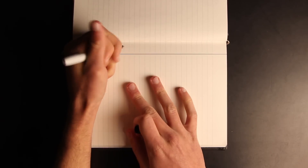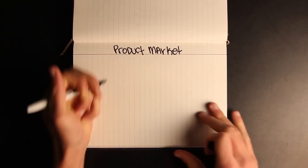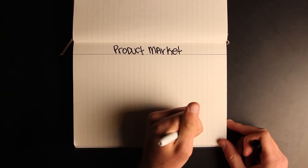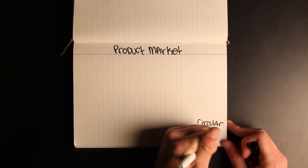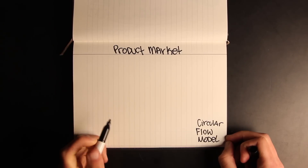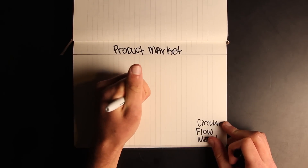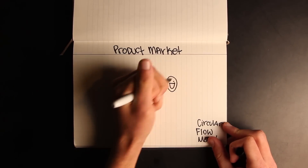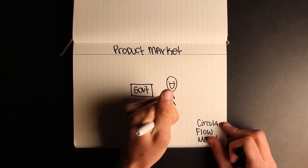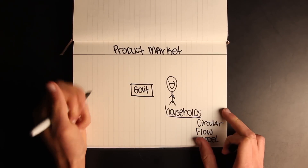Today we're going to be talking about the product market, also called a circular flow model. In the center of the product market is the government, and we also have people or households and businesses.